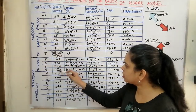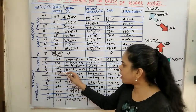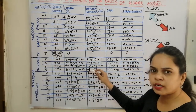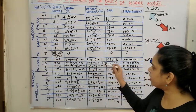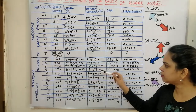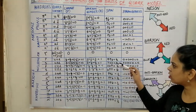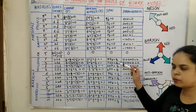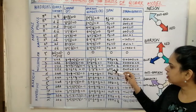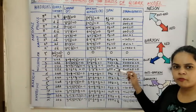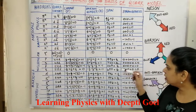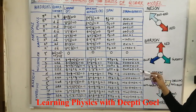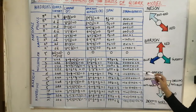For the neutron, it is a u, d, d combination; for the anti-neutron it is ū, d̄, d̄. The neutron has neutral charge (0), baryon number +1, and anti-neutron has baryon number −1. For spin: u is up-spin, d and d are down-spin, so 2 down and 1 up gives +1/2. In the anti-neutron, 1 up and 1 down cancel to give spin 1/2. The strangeness is 0 for the neutron, anti-neutron, proton, and anti-proton as they are all non-strange particles.